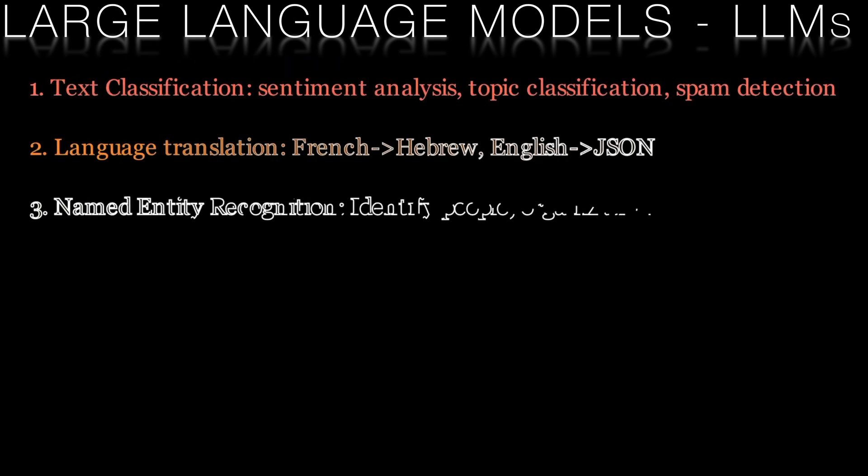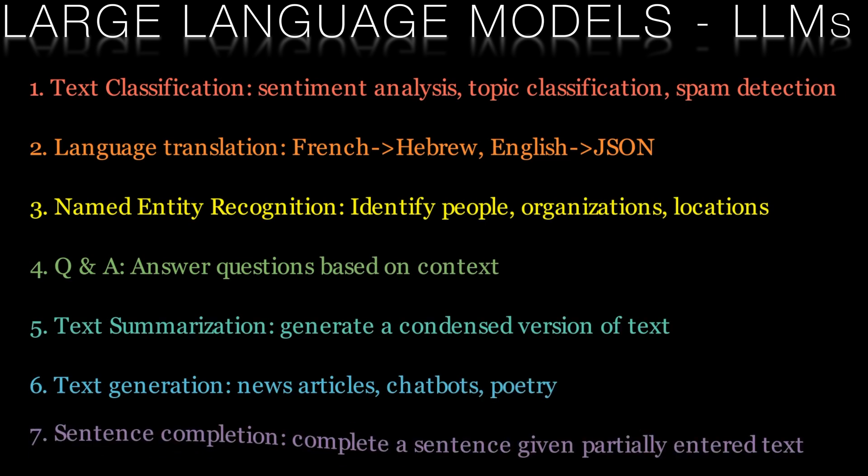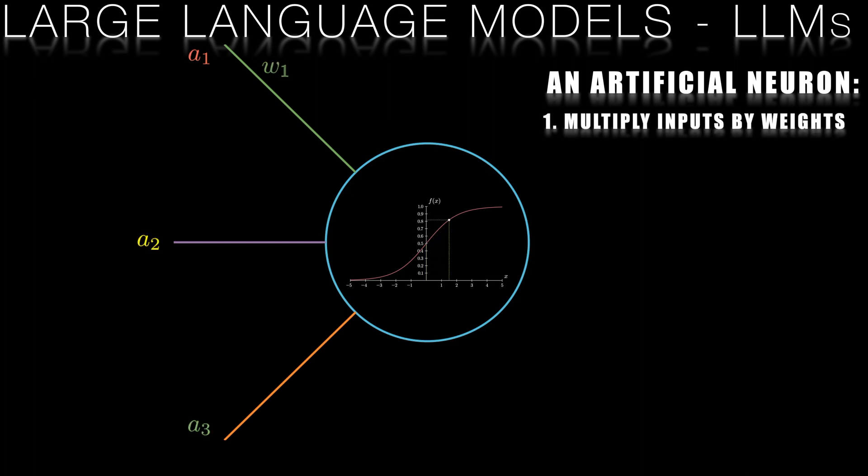Large language models, or LLMs, have made incredible advancements in recent years, with GPT-4 being the latest and most impressive example at the time of video production. These models use deep learning techniques to process and understand vast amounts of text, generating human-like responses to prompts.